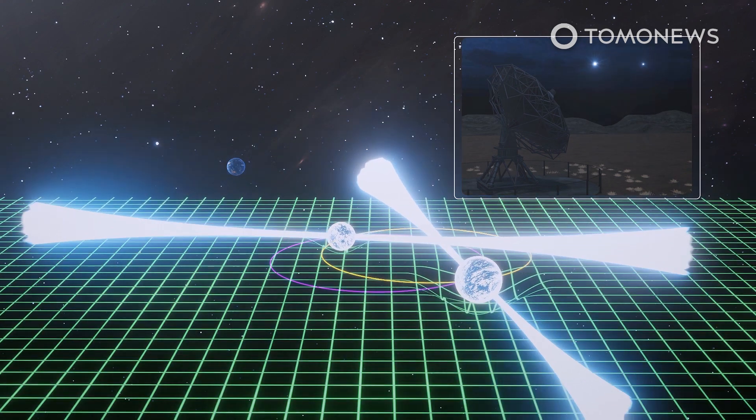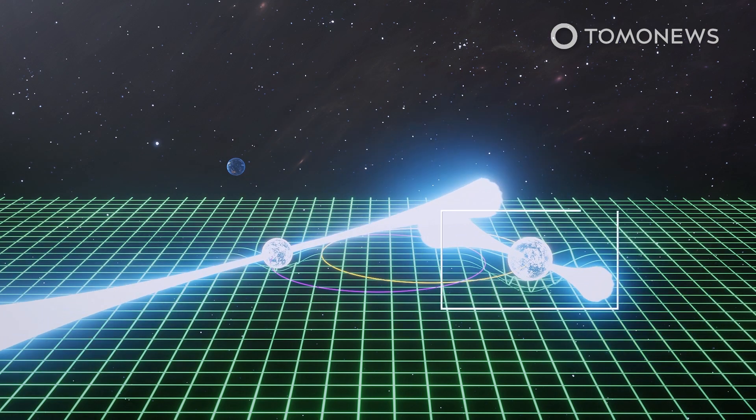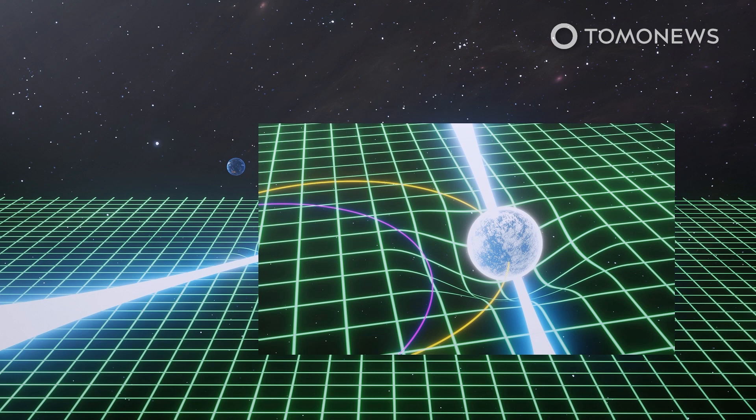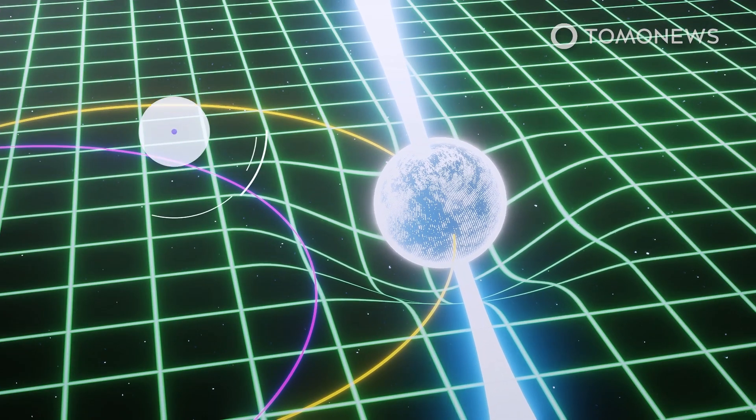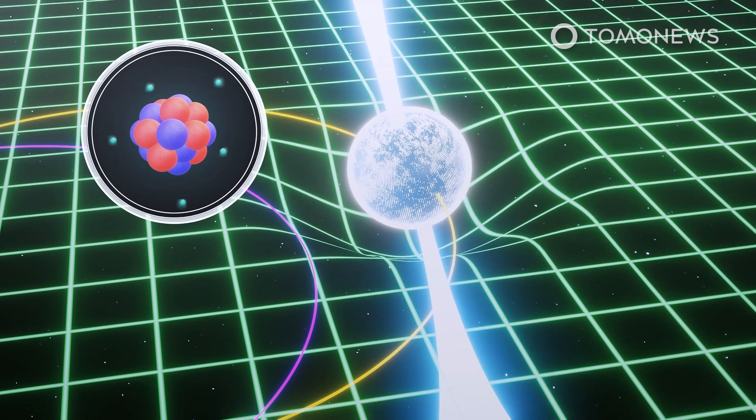They were attempting to compare what they saw to the theory of general relativity, which suggests the ultra-dense double pulsar system, which rotates very consistently, strains the fabric of space-time, sending gravitational ripples away at the speed of light that incrementally drained the system of orbital energy.